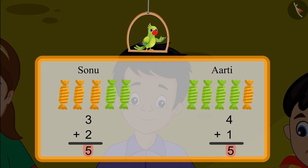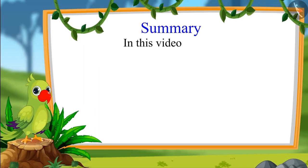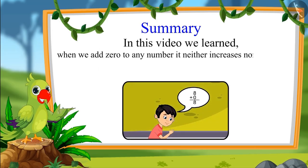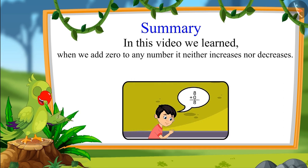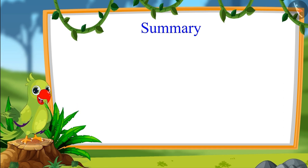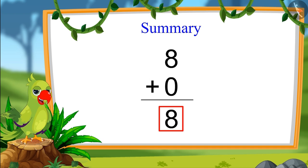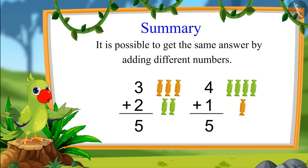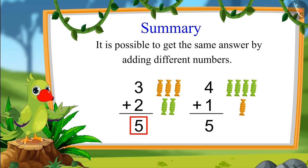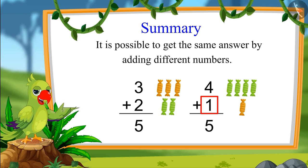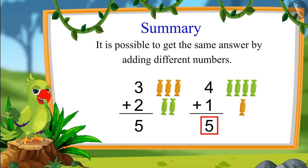So children, it is possible to get the same answer by adding different numbers. In this video we learned that when we add zero to any number, it neither increases nor decreases. For example, when we added zero to eight, the total remained eight. We also saw that it is possible to get the same answer by adding different numbers. For example, when we add three and two, we get five. And when we add four and one, we still get five.